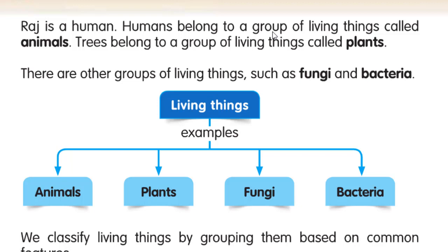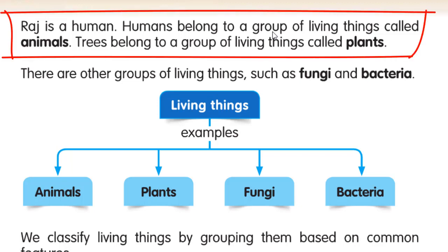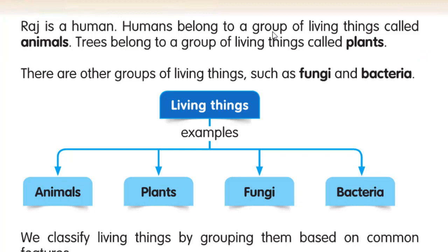Now, on page 19, we have kinds of living things in groups. Jadi kita memiliki jenis-jenis dari living things dalam bentuk kelompok. Tertulis: Raj is a human. Humans belong to a group of living things called animals. Trees belong to a group of living things called plants. Jadi manusia masuk dalam kategori animals — bukan berarti human itu adalah hewan, tapi dia masuk kategori sebagai hewan. Sedangkan trees masuk ke dalam kategori plants, tanaman.